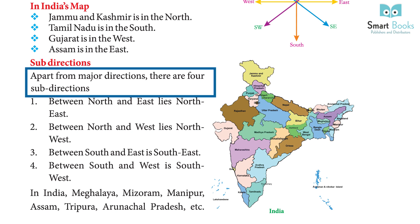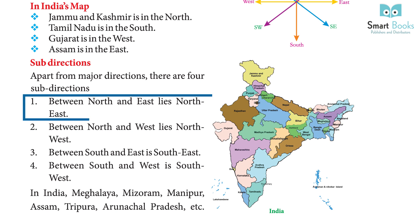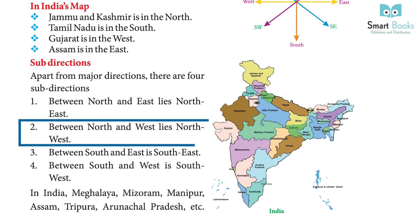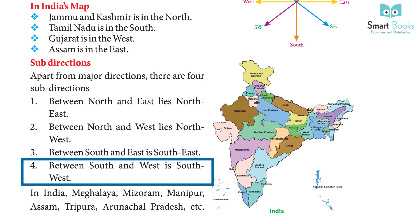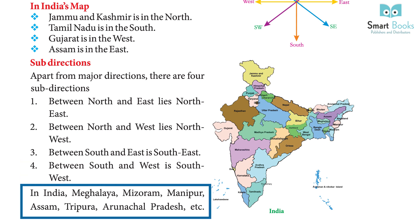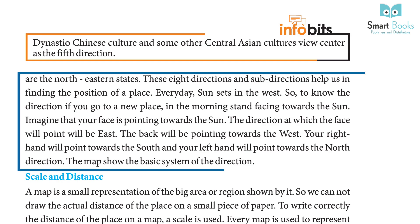Apart from the four major directions, there are four sub-directions: between north and east lies north-east; between north and west lies north-west; between south and east is south-east; between south and west is south-west. In India, Meghalaya, Mizoram, Manipur, Assam, Tripura, and Arunachal Pradesh are the north-eastern states.